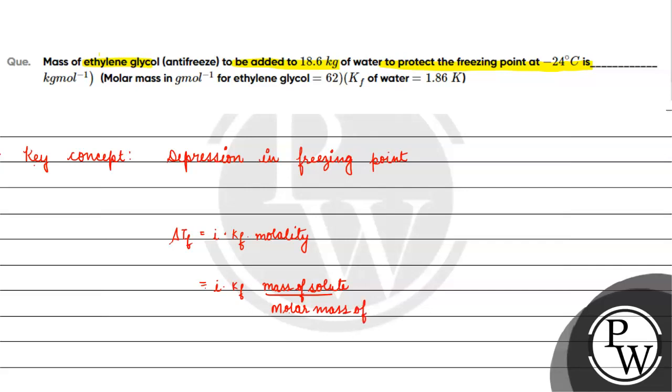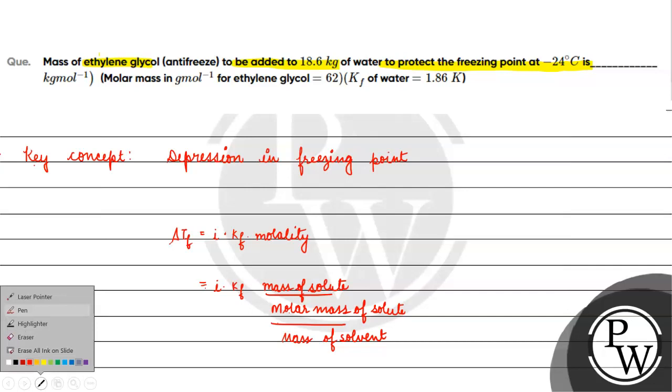So it becomes: mass of solute by molar mass of solute (62 gram per mole) divided by mass of solvent in kilogram.